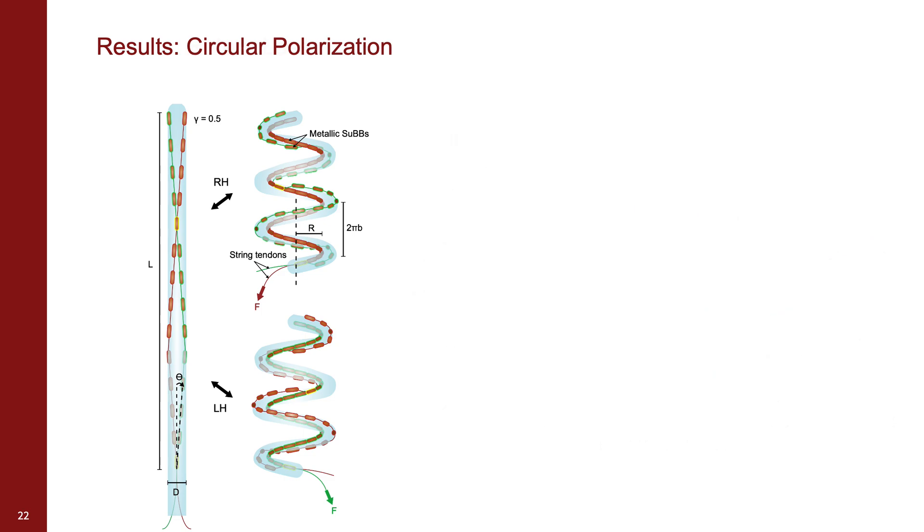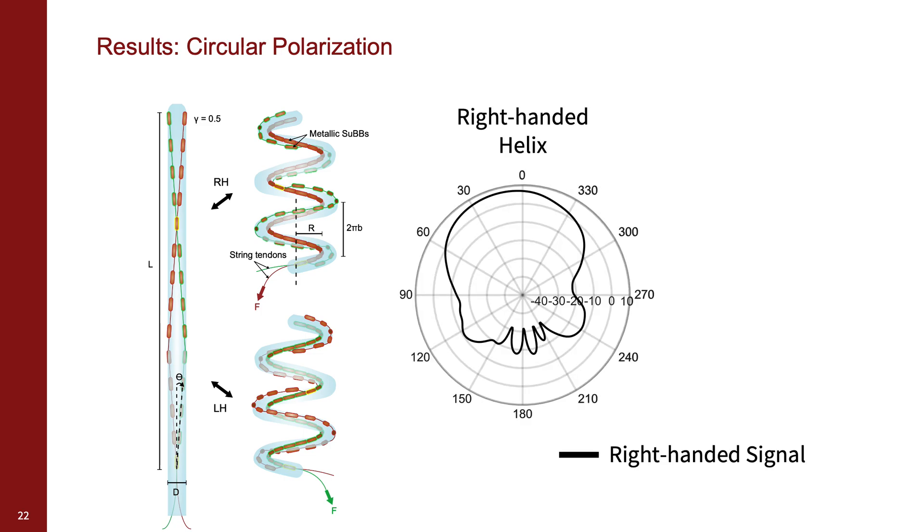While the frequency response is similar in the two states, it is in the radiation pattern that we see the reconfiguration of the antenna properties. For the right-handed helix configuration, we see amplification of right-handed polarized signals and attenuation in left-handed polarized signals. Helical antennas are directional, so the point of comparison is along the axis of the main lobe.